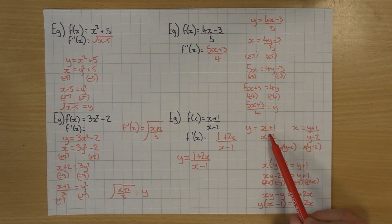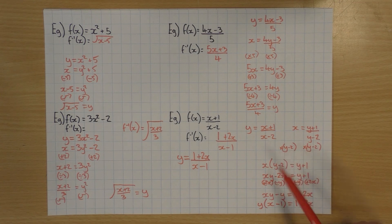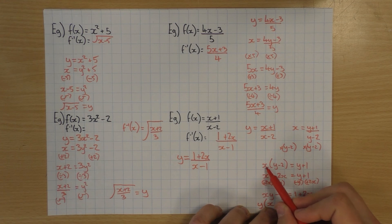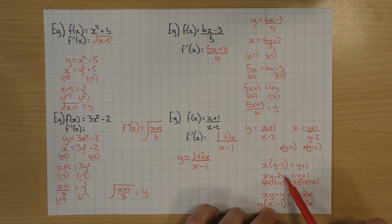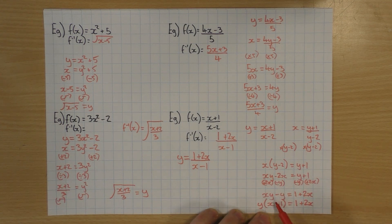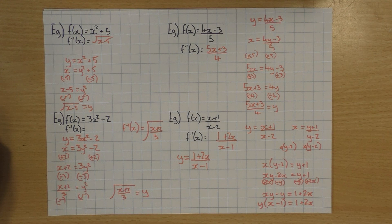To summarise: if you're dividing by anything, make sure you multiply by it first. Hopefully that's explained how to do inverse functions. I think it's quite nice because it links in with rearranging equations, as long as you remember at the end to write the answer as the inverse function. Hopefully that helps — thanks for watching, guys.